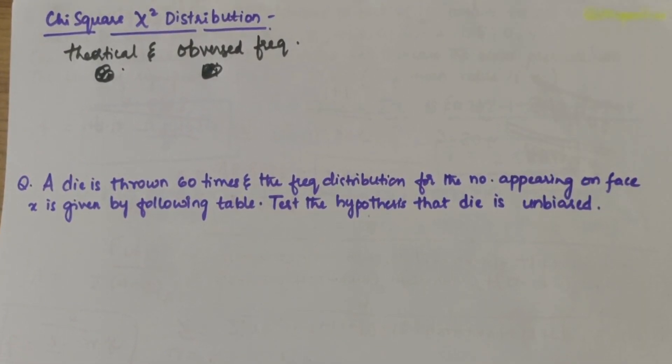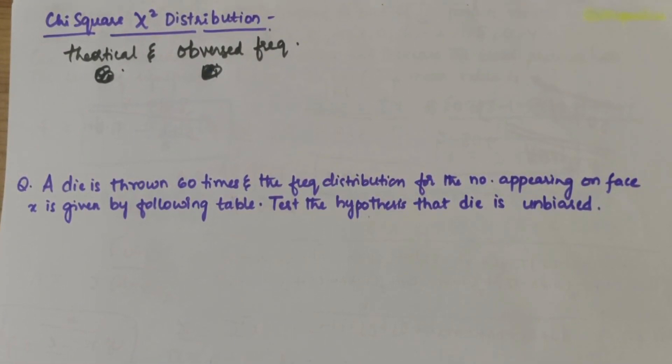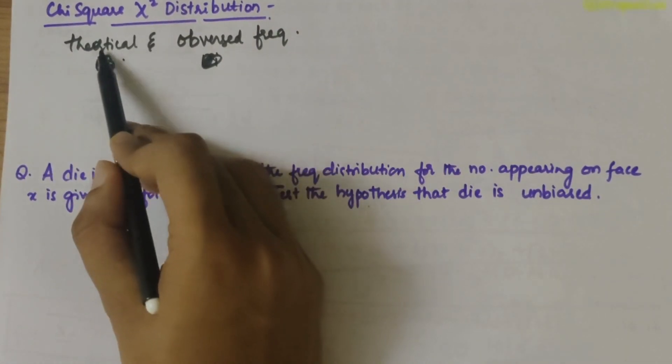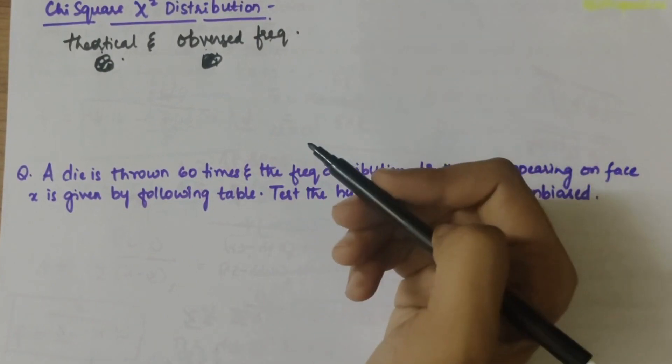In this video we'll be discussing chi-square distribution formula and important points to remember, and also solve a numerical on chi-square distribution formula. So firstly let's look into the definition. Chi-square distribution provides us a measure of correspondence between the theoretical and observed frequencies.